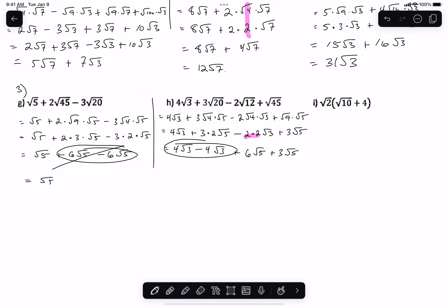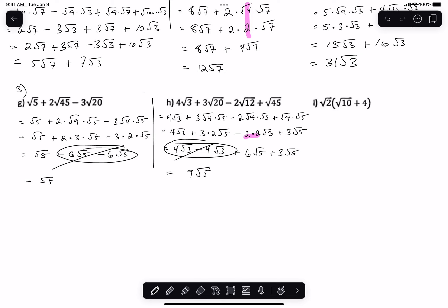Those cancel out. 4 root 5 take away 4 root 5 is 0. So 6 plus 3 is going to be 9 root 5 for that answer.